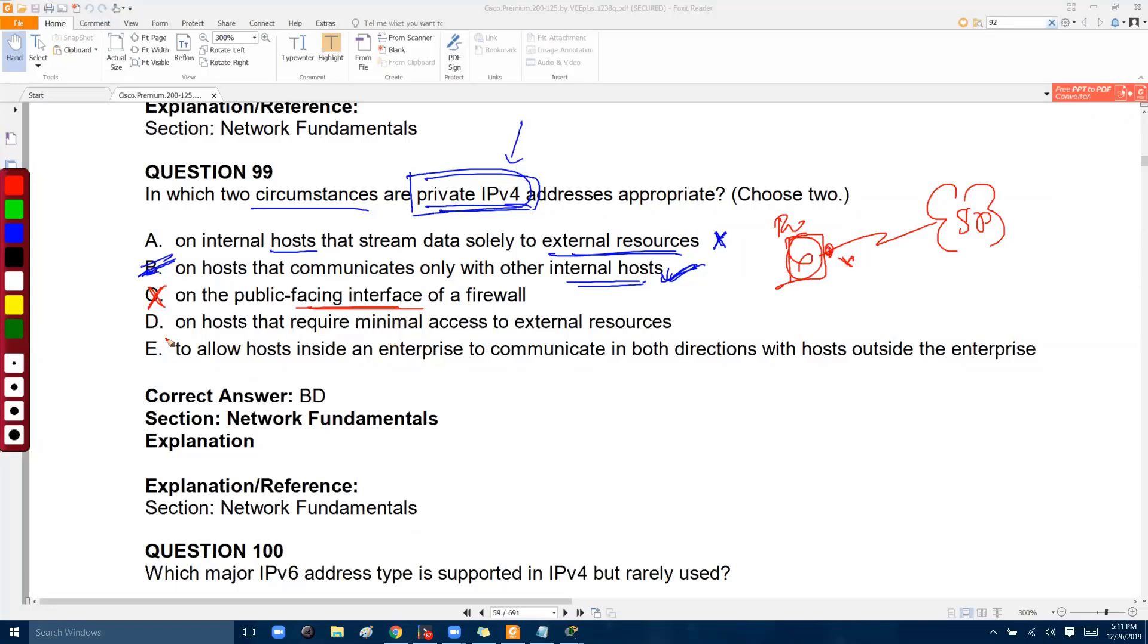But we can use private IPs for hosts which have minimum access to external resources. Like in the LAN, we'll be using this because the LAN does not have direct access to external resources. Of course, when you're sending data out, we can translate that with NAT concepts, which we discussed.